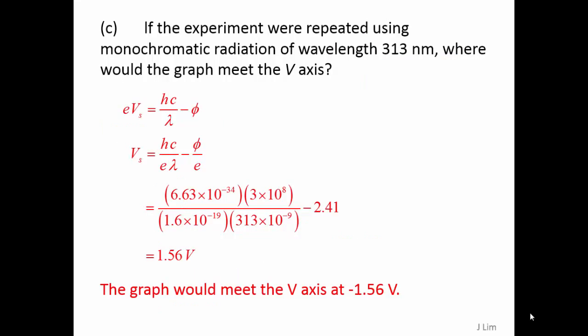For 313 nm light, the stopping potential is 1.56 volts.